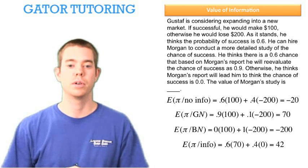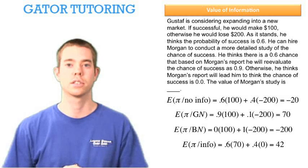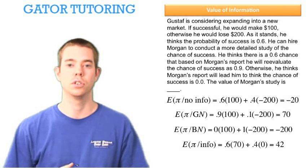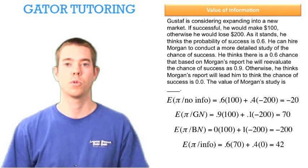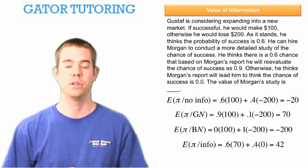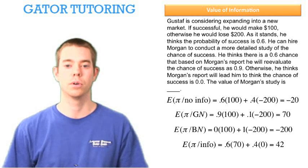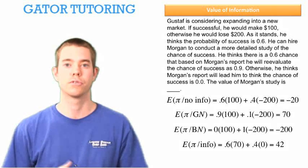The expected profit given information is the 60% chance that we got good news times the expected profit given good news, which is $70, plus the 40% chance that we get bad news. Instead of taking negative $200, we would always prefer $0 compared to a negative number. So that 40% is multiplied by $0, and the expected profit given information is $42.